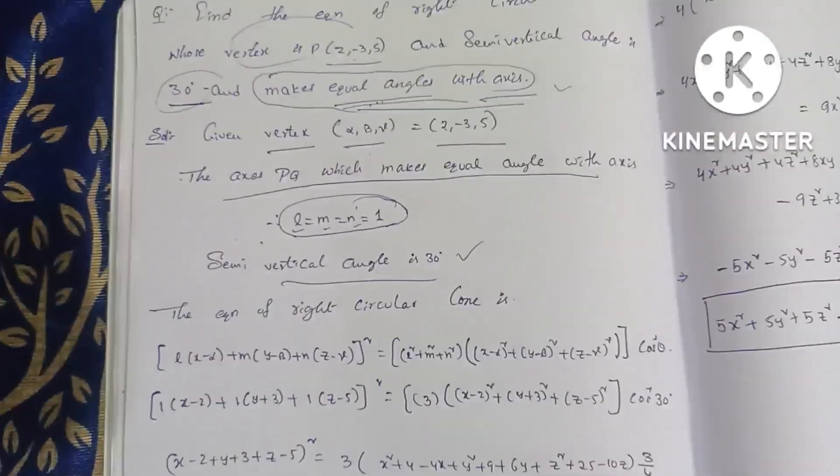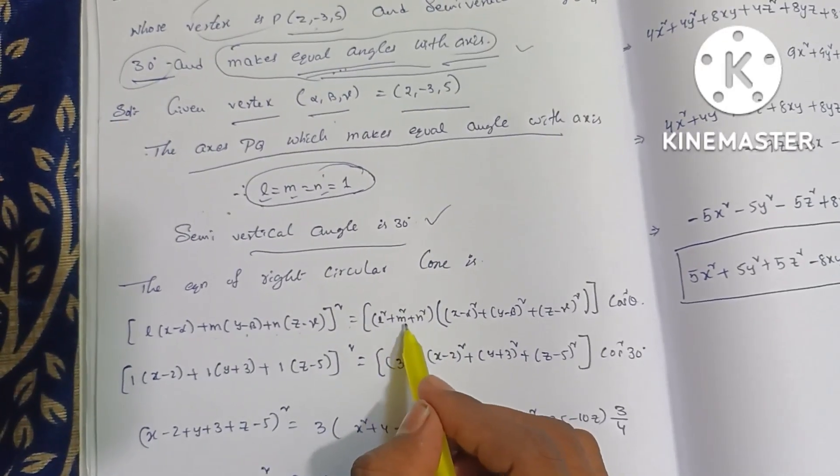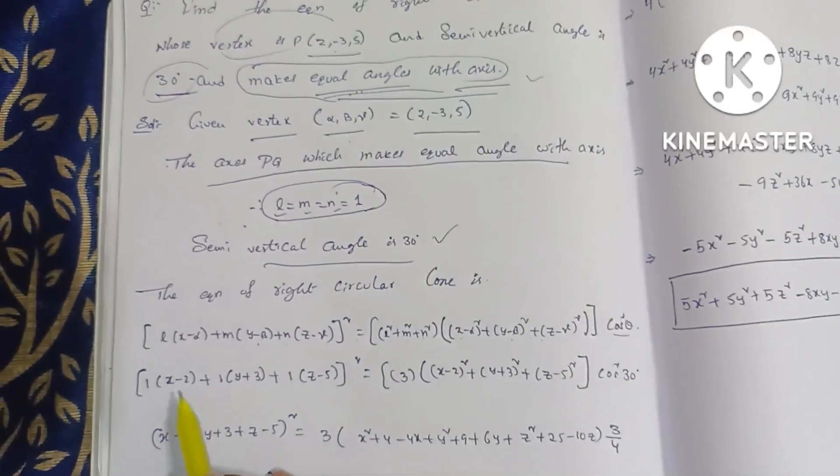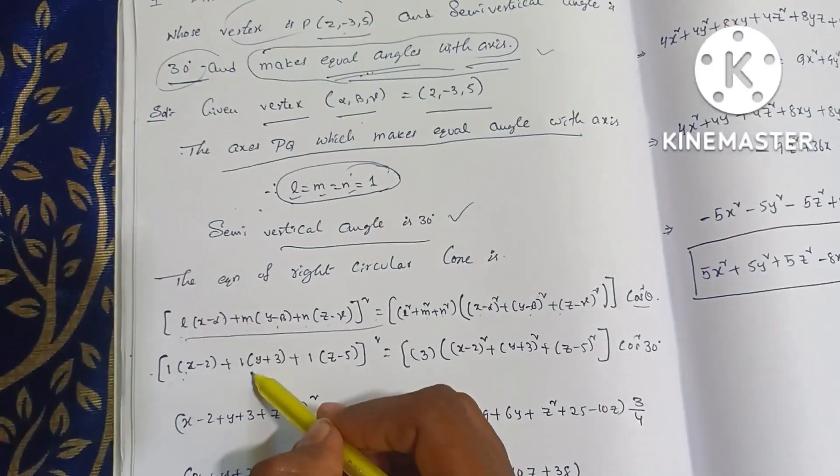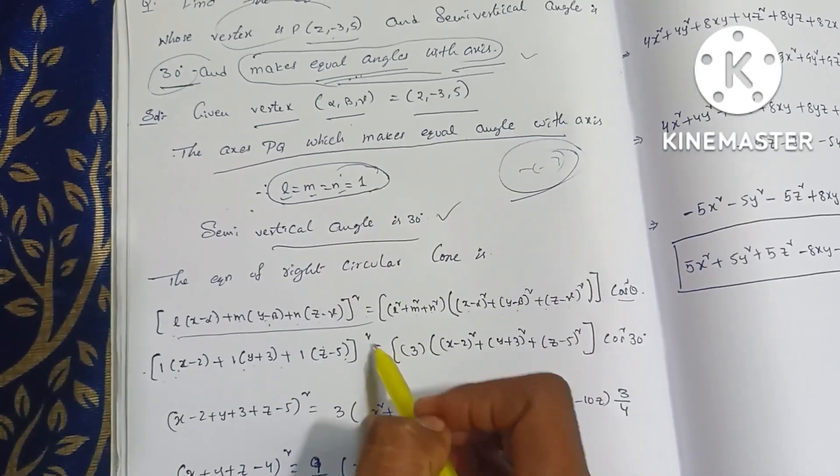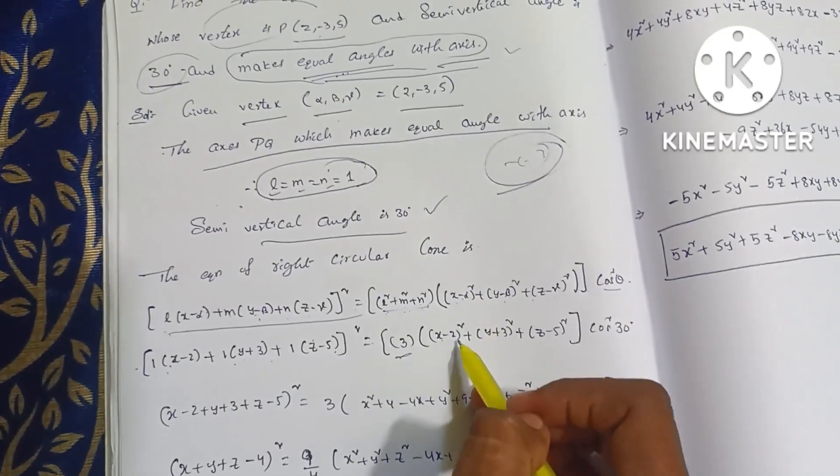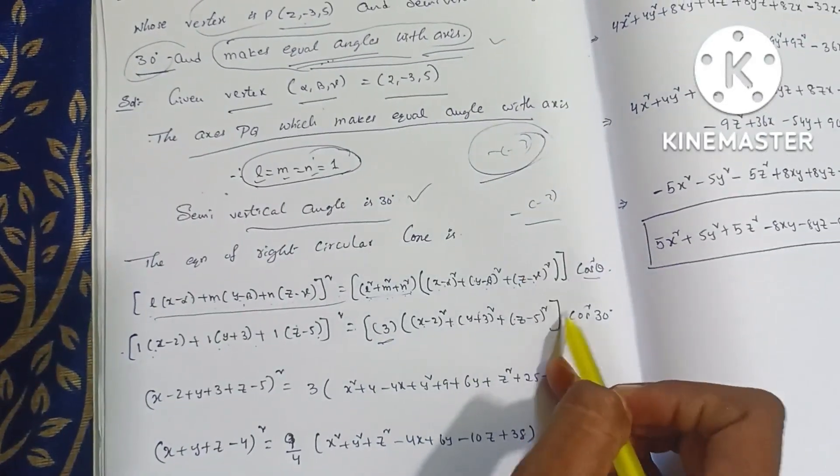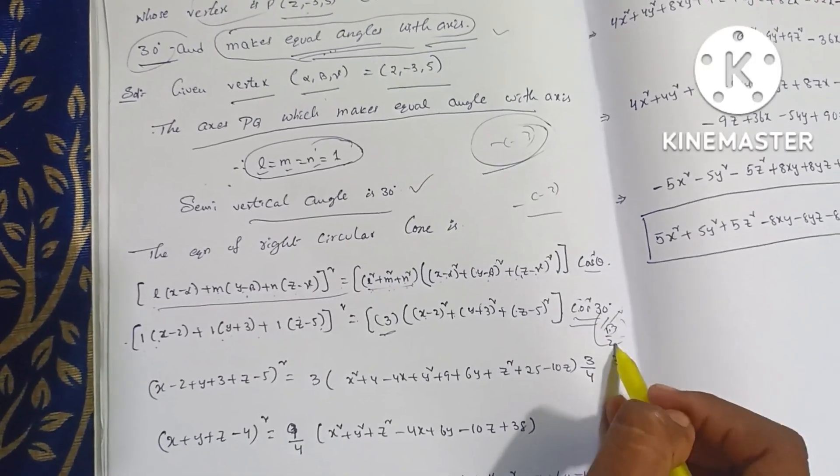So the equation of right circular cone is formula: L into X minus alpha plus M into Y minus beta plus L into Z minus gamma whole square is equal to L square plus M square plus N square into X minus alpha whole square plus Y minus beta whole square plus Z minus gamma whole square into cos square theta. Cos 30 value root 3 by 2. Cos square, so whole square is 3 by 4.